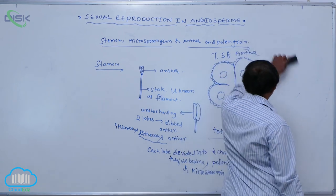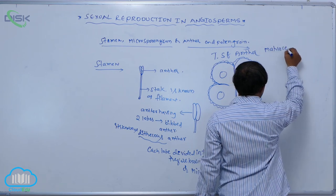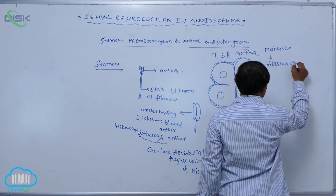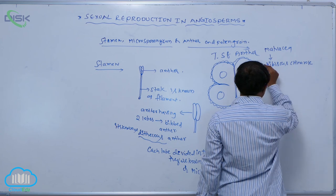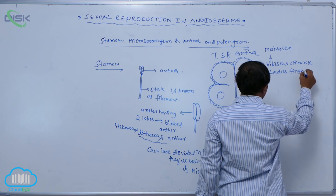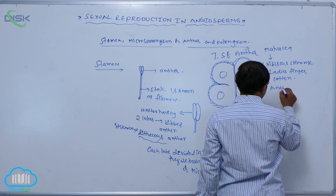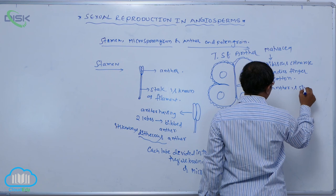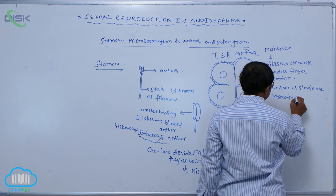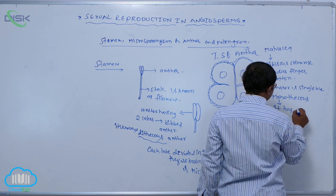But in some plants there is only a single lobe. For example, in the Malvaceae family—hibiscus which is China rose, lady's finger, and cotton—the anther is single-lobed. This is known as monothecous.